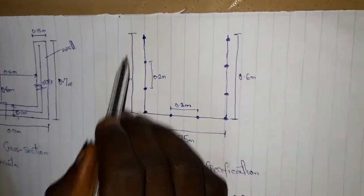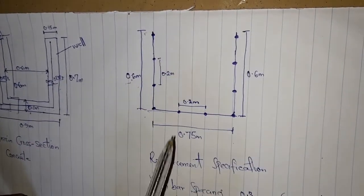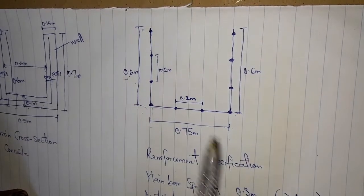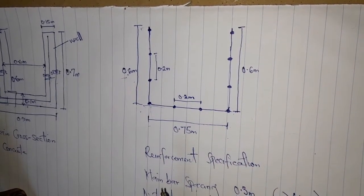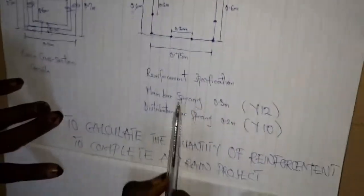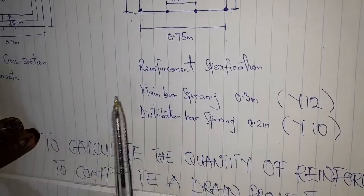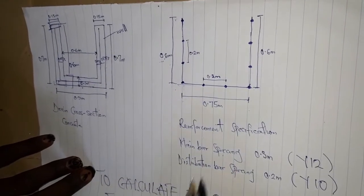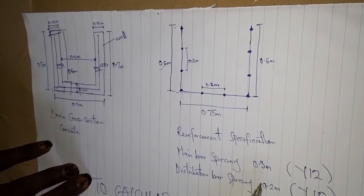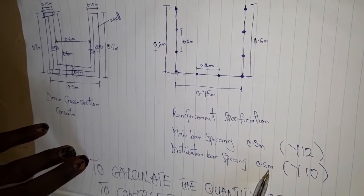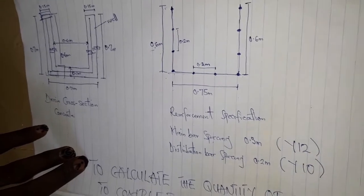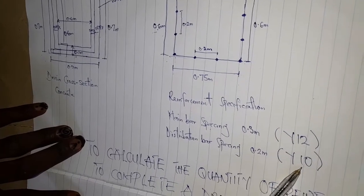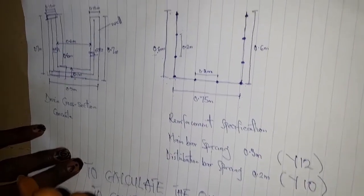So the diagram for the reinforcement shows 0.6 meter from top to bottom and 0.75 meter from end to end. The specification for the reinforcement: we have the main bar and distribution bar. The main bar is the U-bar, and the distribution bar is attached to the U-bar. The spacing for the main bar is 0.3 meter and for the distribution bar is 0.2 meters. The iron to be used for the main bar is Y12 and for the distribution bar is Y10.